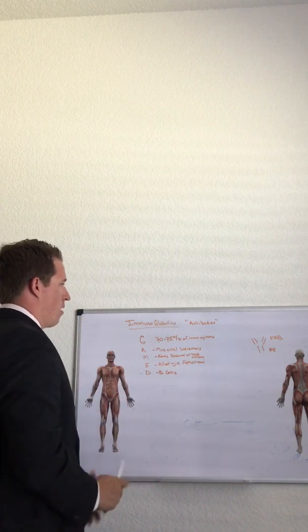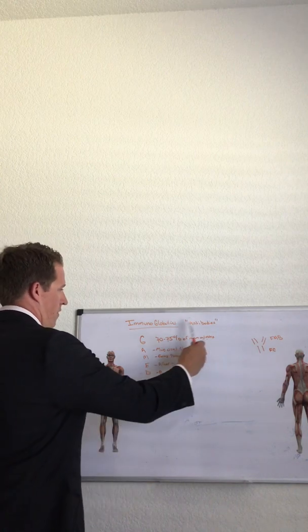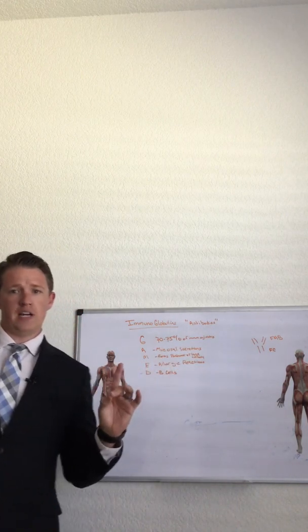So immunoglobulins are part of our immune system. They're basically our antibodies. There are five major types.